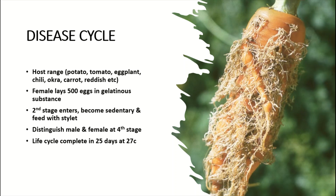The female lays around 500 eggs in a gelatinous substance, and as a whole these are called egg masses. Second stage juveniles enter the root and become sedentary after a particular life stage — they become sedentary at the J3 stage and feed with the help of a needle-like structure called the stylet. We can only distinguish male and female nematodes at the fourth juvenile stage, J4.